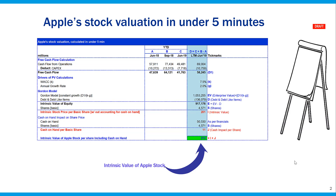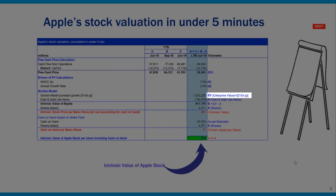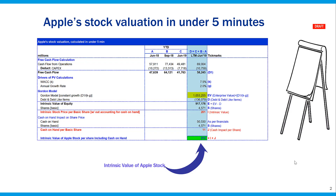We obtained the WACC for Apple from GuruFocus.com. Then we run the very simple formula and come up with an enterprise value of basically $1 trillion. This represents the enterprise value from all sources of funding — debt and equity. So we need to pay out the outstanding debt, with the remaining piece consisting of the intrinsic value of equity of $900 billion. Then we divide the $900 billion by shares outstanding and get an intrinsic stock price value of $201. We also know that Apple has cash on hand of $50 billion. If that is to be distributed to all shareholders, then it inherently has a value of $11 per share owned. So the total implied intrinsic stock price value comes up to $212.